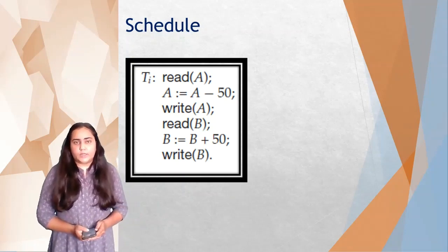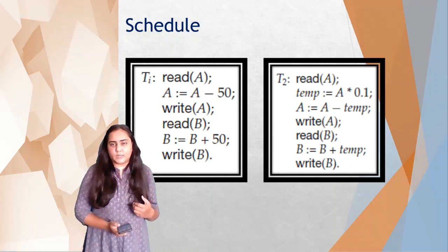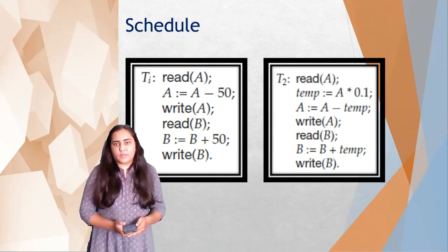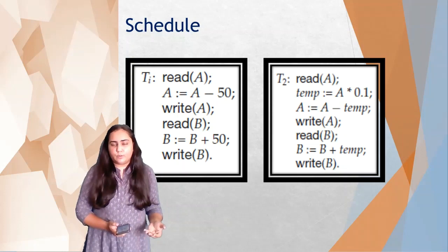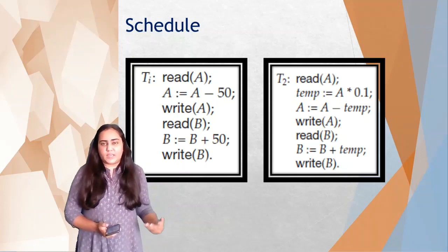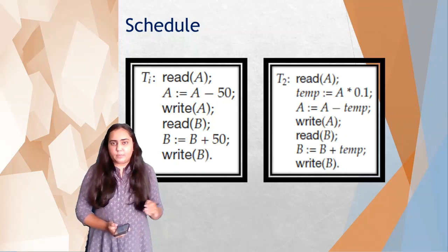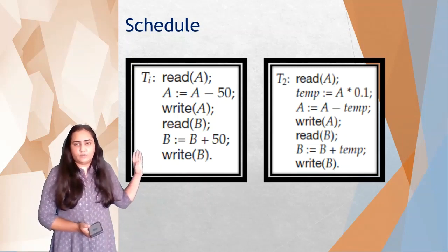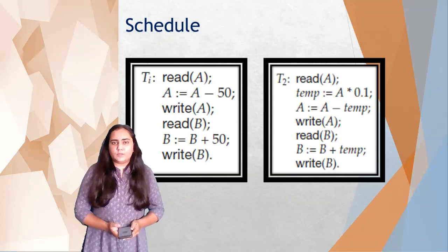So this is one transaction. Now I have another transaction, T2, where there is a 10 percent deduction from A which is then added to B. T2 first reads A, stores 0.1 times A in a temp variable — that is 10 percent of A — and then subtracts that temp variable from A and adds it into B. So T1 transfers 50 from A to B and T2 transfers 10 percent of A from A to B.